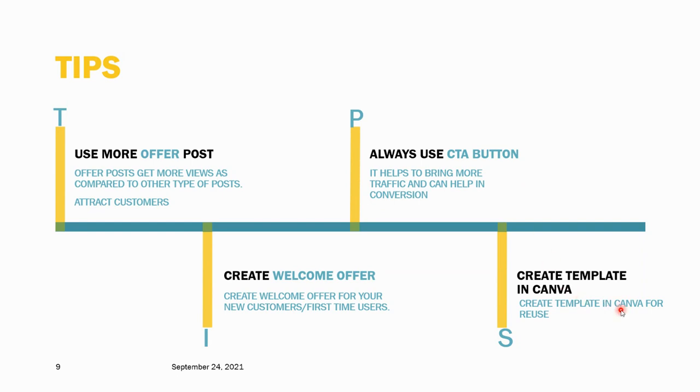Create a template in Canva so you don't need to worry about size. You can set a custom design at 405 by 305 pixels, ensuring your posts are always the correct dimensions.